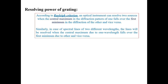According to Rayleigh, an optical instrument can resolve two light sources when the central maxima in the diffraction pattern of one source falls over the first minima in the diffraction pattern of the other, and vice versa. Similarly, in the case of spectral lines of two different wavelengths, the lines will be resolved when the central maxima due to one wavelength falls over the first minima due to the other and vice versa.